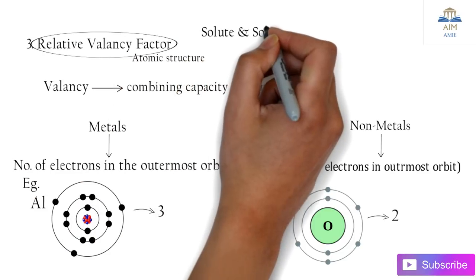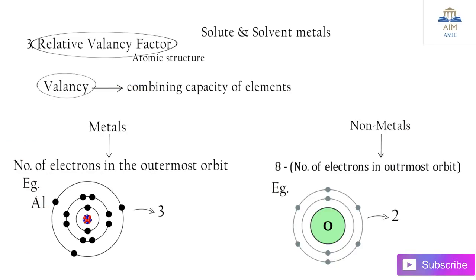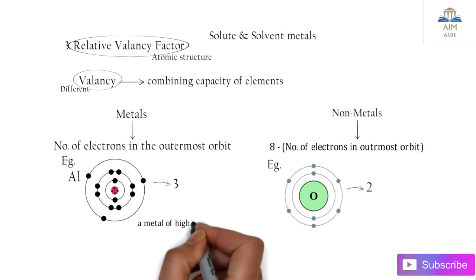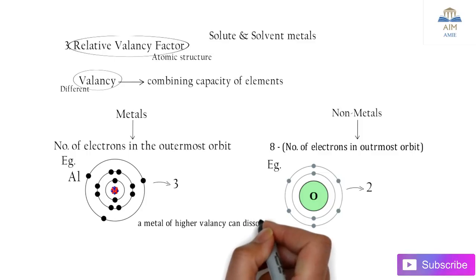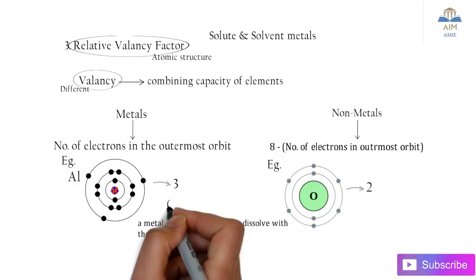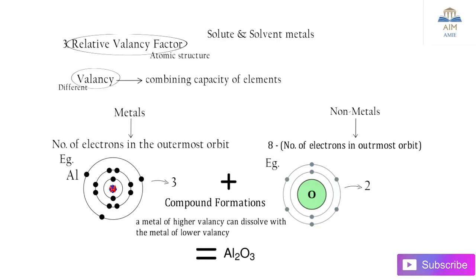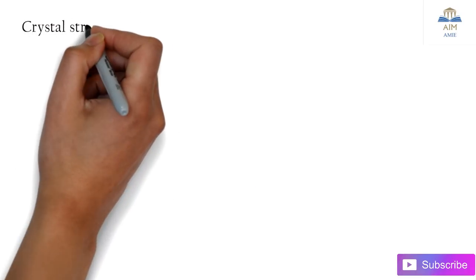Let's check the relative valency factor and how it works in case of solute and solvent metals. A metal of higher valency can dissolve with a metal of lower valency, such as in case of aluminium and oxygen. The formation of compounds occurs. Aluminium and oxygen gives us Al2O3, aluminium oxide, which is a compound. The relative valency factor plays an important role in the formation of solid solutions.